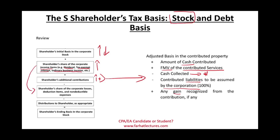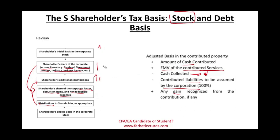The opposite is true when the corporation incurs a loss, has deduction items, or has non-deductible expenses — those will reduce the stock basis of the shareholder. Any distributions, which are the opposite of contributions, will also reduce the stock basis of the S shareholder. The result is the ending shareholder stock basis.